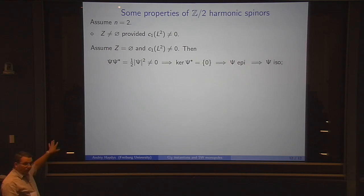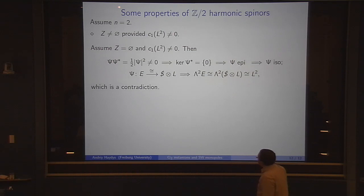Assume that Z is empty, and the determinant line bundle L squared is non-trivial. Then the algebraic constraint tells us: if Z is empty, Psi is defined on all of M and satisfies this constraint. But this means that the kernel of Psi star is trivial, so Psi is an epimorphism, and by dimension count this is also an isomorphism. This is an isomorphism as a map between E and the spinor bundle. But we assume that the top power of E is trivial, which means that the determinant of the spin-C spinor bundle must be trivial as well, but this is nothing else but L squared, which is a contradiction.